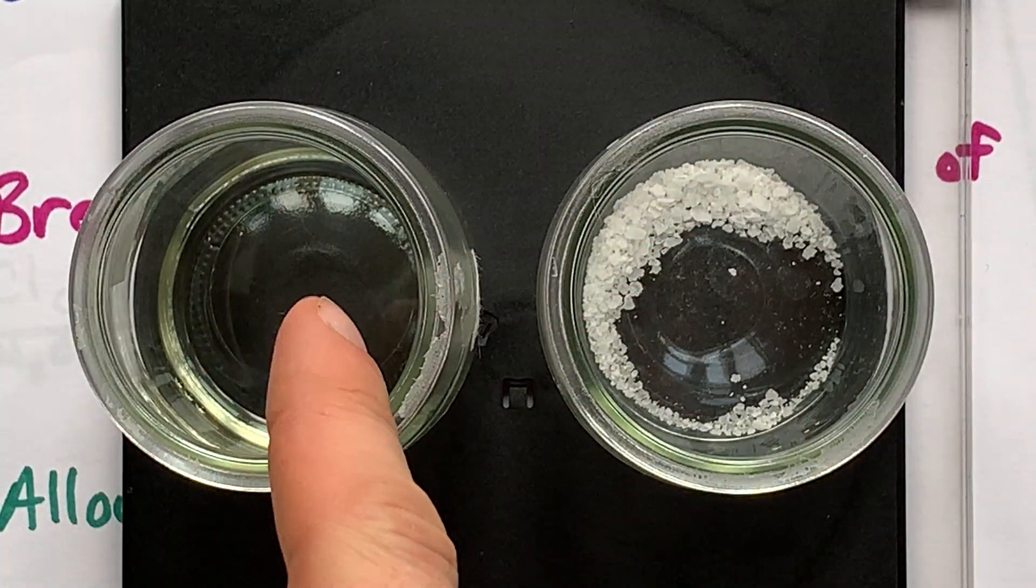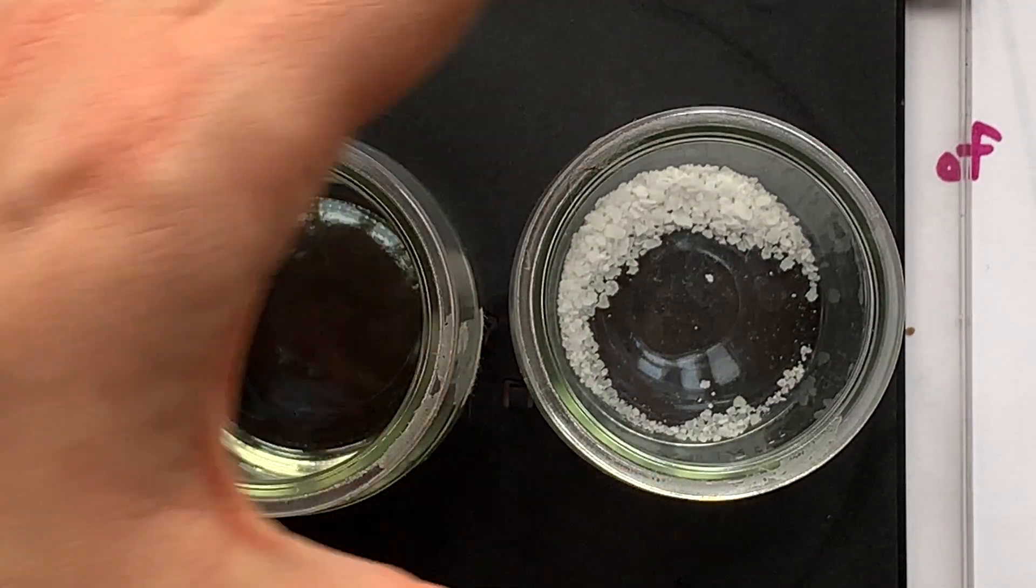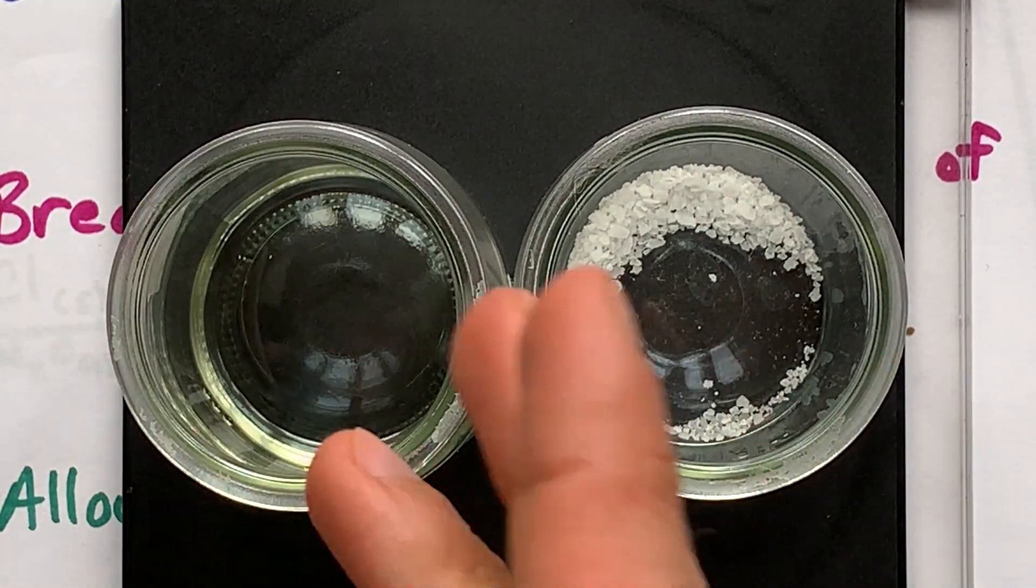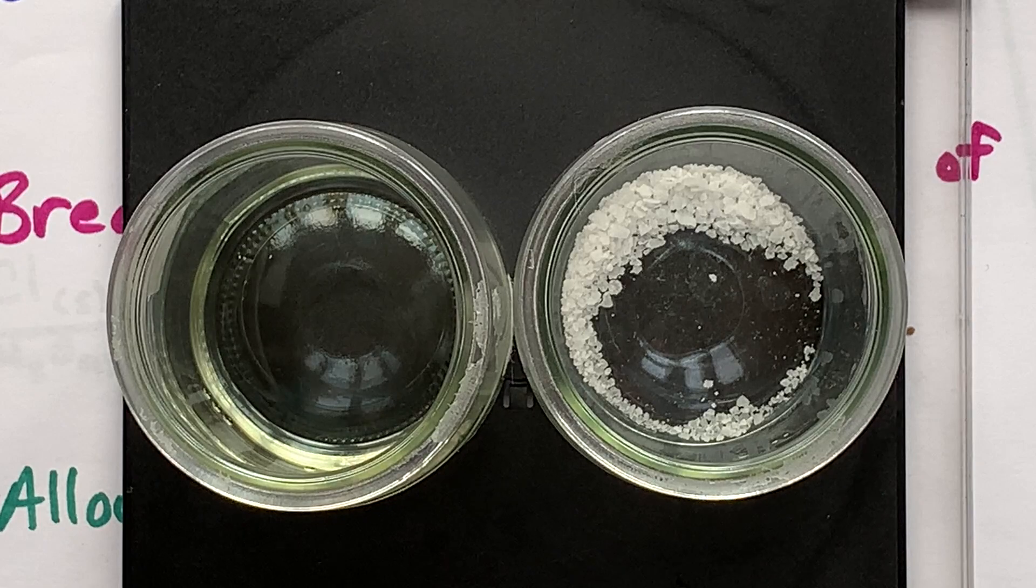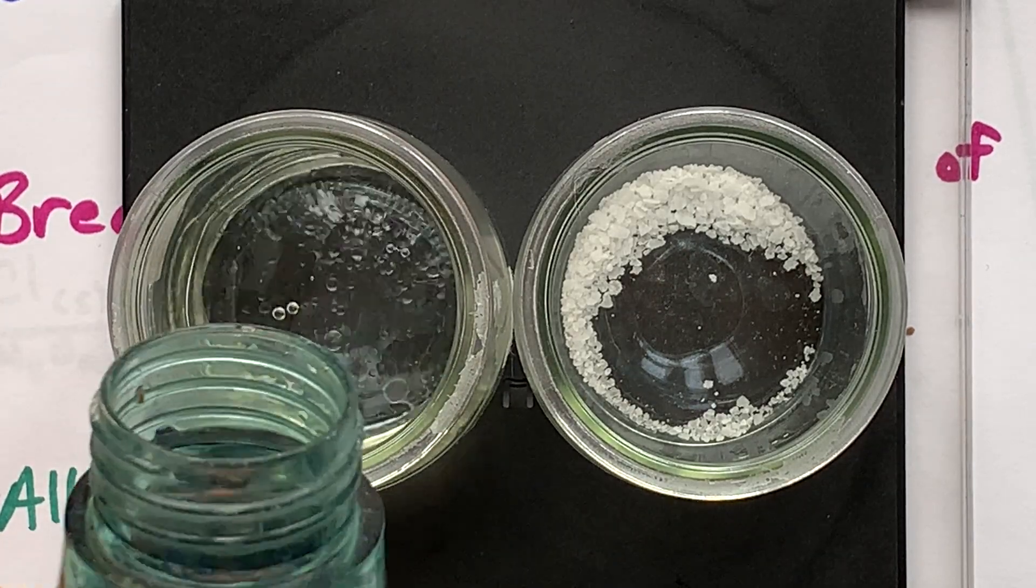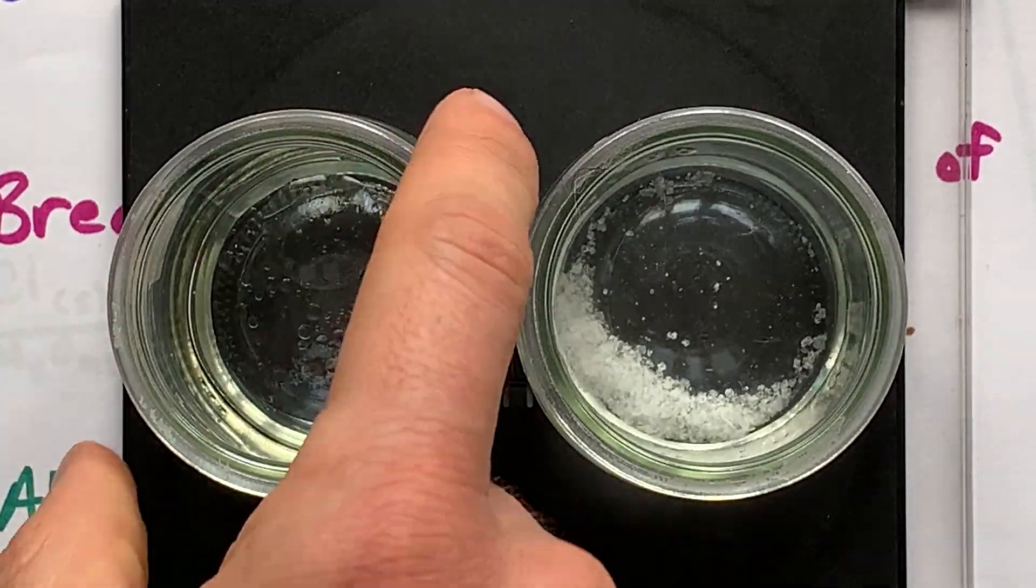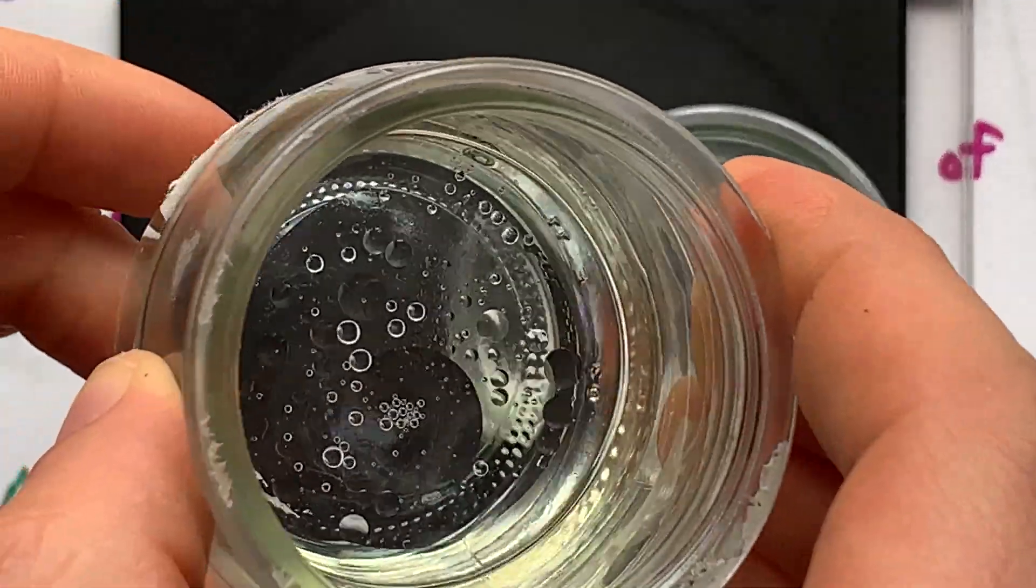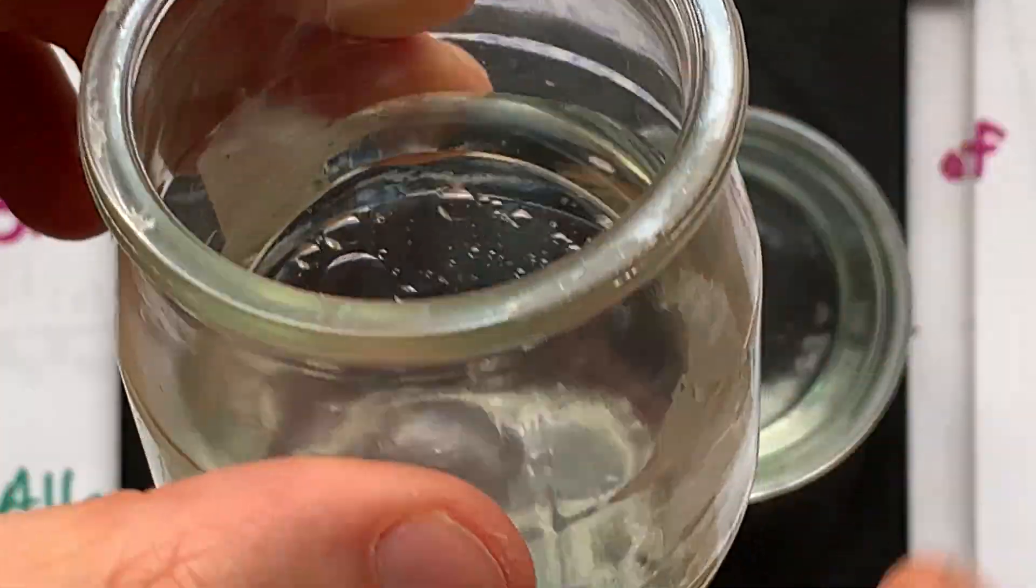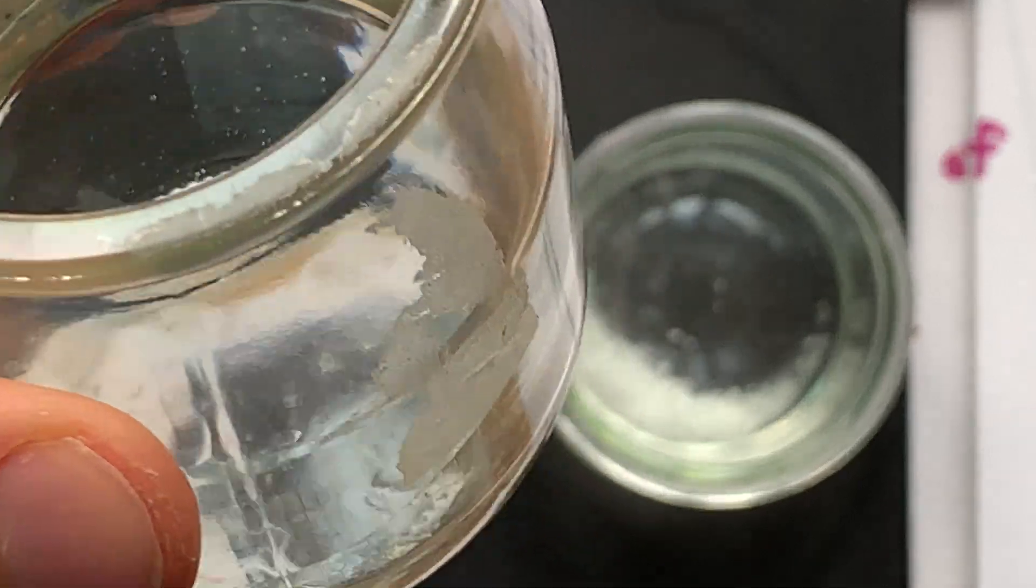Hello. In the left jar, I have a little bit of oil, and in the right jar, I have a little bit of table salt, or NaCl. What happens when I add water to each? You probably already know what happens. You can see here that the oil is not mixing with the water. It's forming little bubbles, and actually, if you're careful, you can see a layer of oil on top of the water.